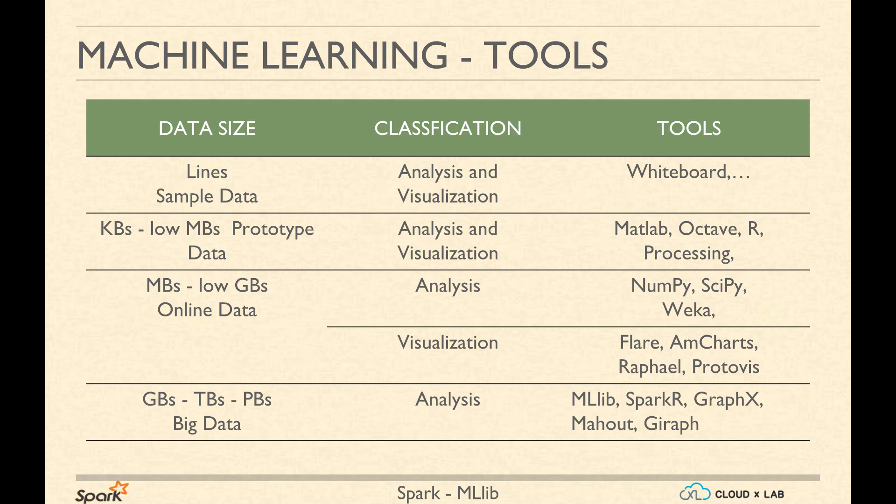But if the data goes beyond gigabytes, we would have to use distributed computing libraries such as MLlib for machine learning, SparkR for analysis, and GraphX for complex graph processing. Other similar libraries from the Hadoop ecosystem are Mahout and Giraph.